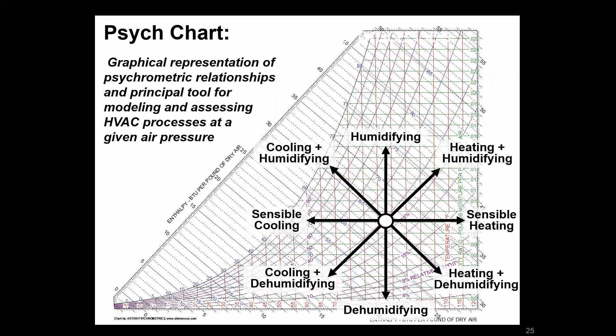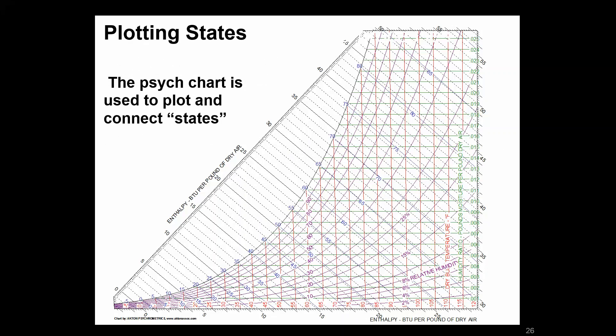We left off last time with introducing the psych chart as a graphical representation of the different relationships of moist air. What we use this for is plotting different states or conditions of air: where we are, where we want to be for design purposes, or looking at outside air, zone conditions, or mixing air.